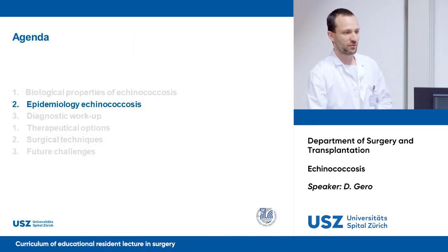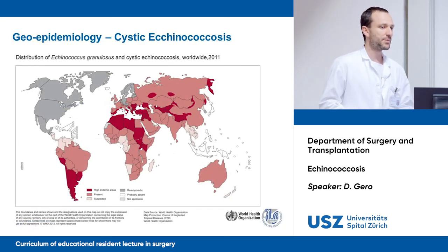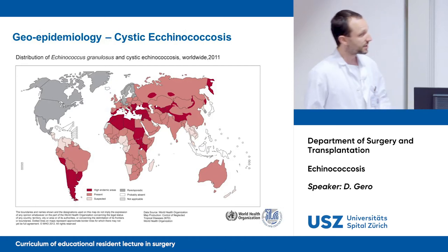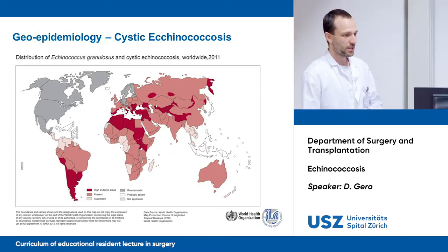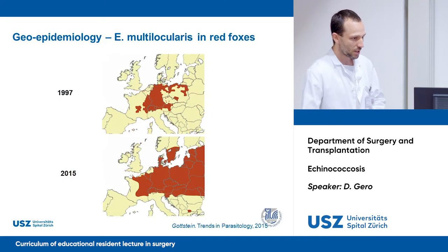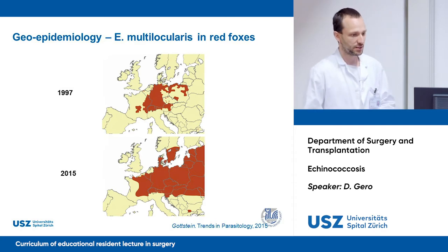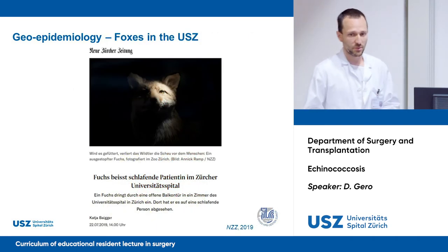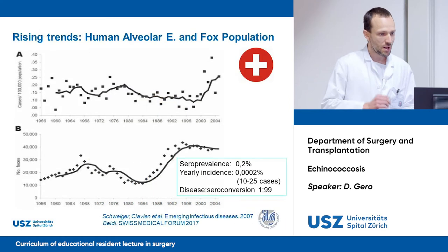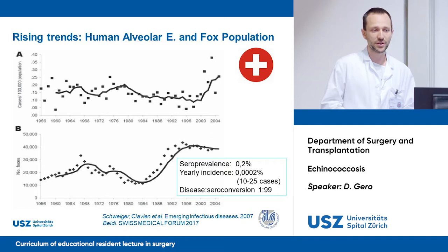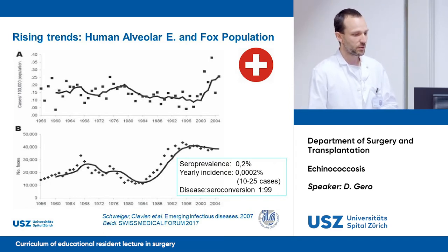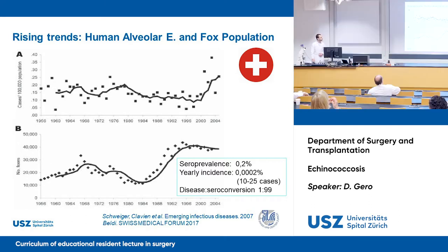This brings us to the epidemiology of echinococcosis. On this map you can see the geo-epidemiology of cystic echinococcosis — the northern American continent is not really affected, while endemic areas exist in southern America, Africa, the Middle East, and the Siberian Peninsula. Another map shows the increase in the red fox population in Europe over the last 15 years, including in Switzerland and Zurich. Last summer, media reported the presence of a red fox in this hospital building where a sleeping patient was attacked. A Swiss publication showed a correlation between increasing fox population and reported human alveolar echinococcosis, with a yearly incidence of 10 to 25 cases and a seroprevalence of 0.2 percent.